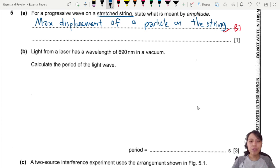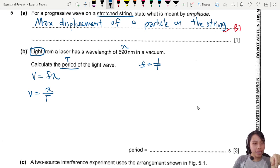Next part: light from a laser has a wavelength, calculate the period T of the light wave. For wavelength lambda, there's not many equations. We have v equals f lambda, or since frequency is 1 over T, we can substitute that in and get v equals lambda over T.